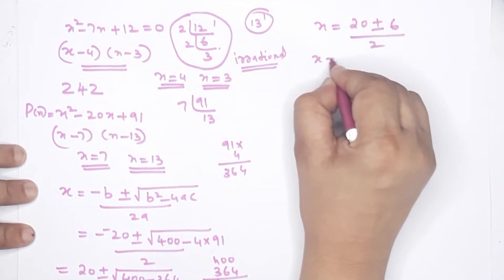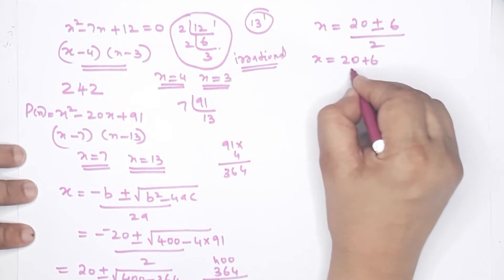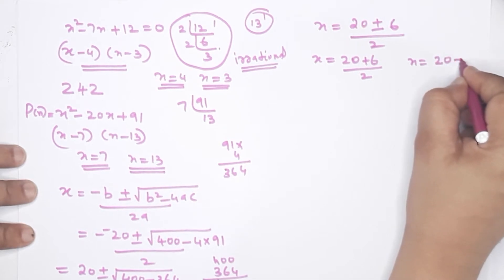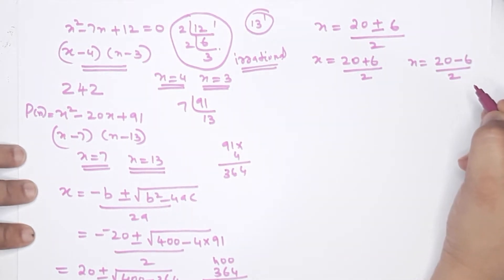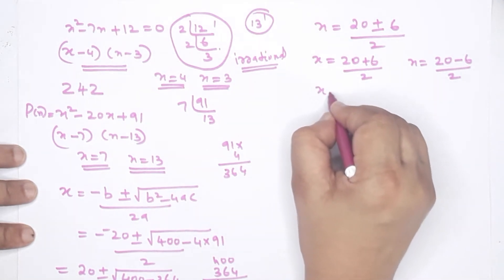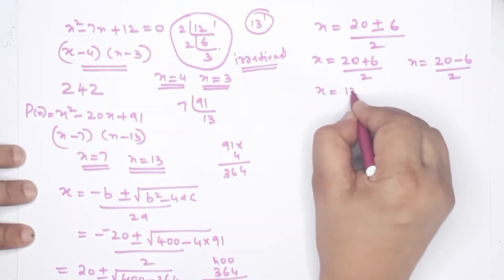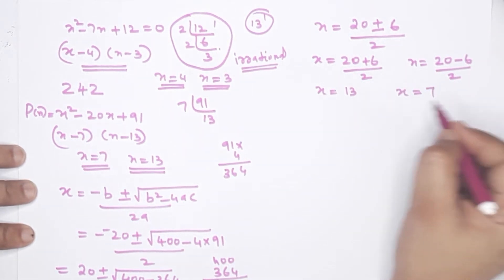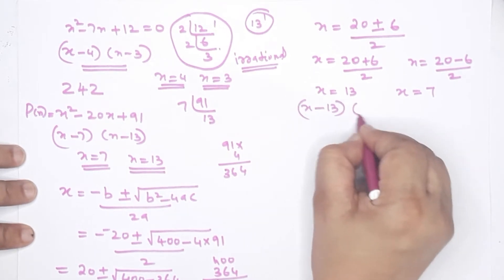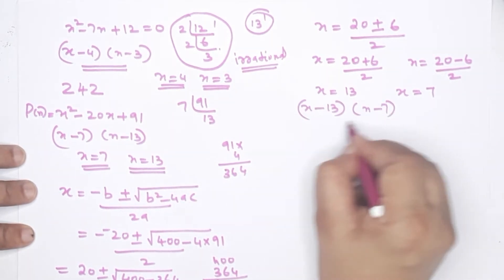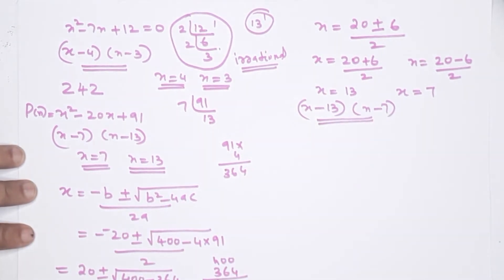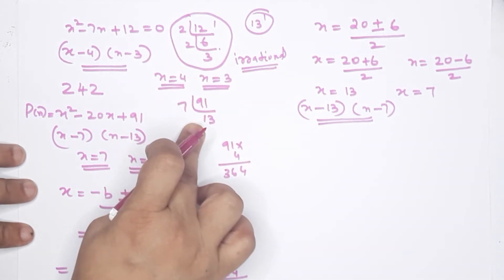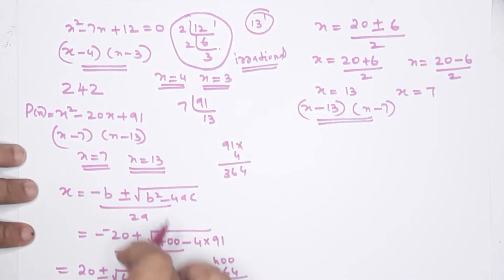With the quadratic formula: x = (20+6)/2 = 26/2 = 13, and x = (20-6)/2 = 14/2 = 7. So x-13 is the first factor and x-7 is the second factor. This confirms factorization gives two factors. This is factorization — the quadratic formula is consistent.